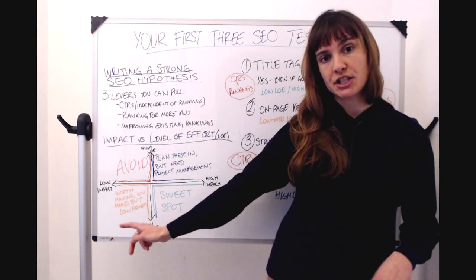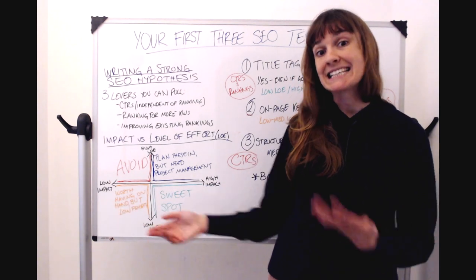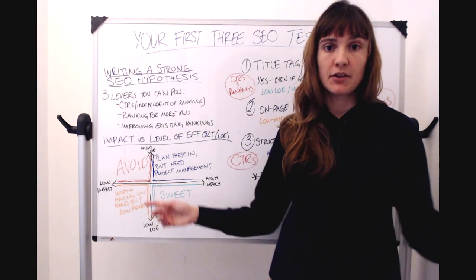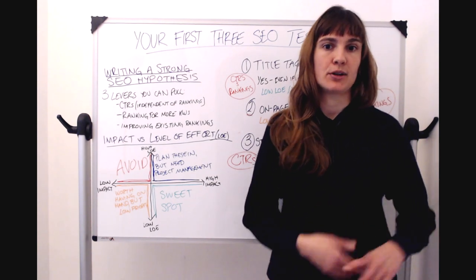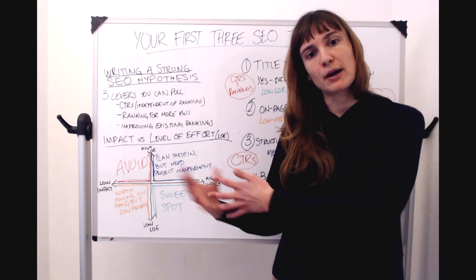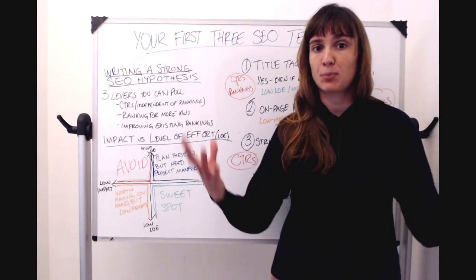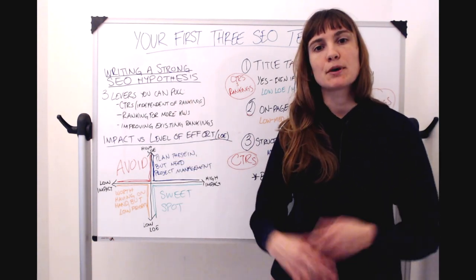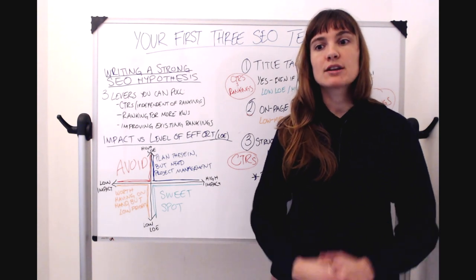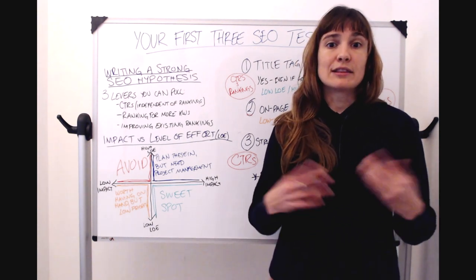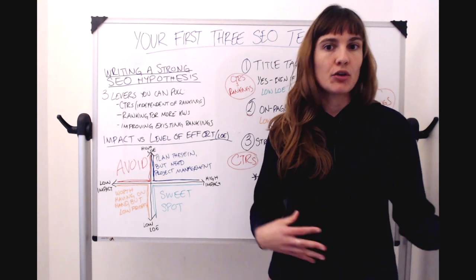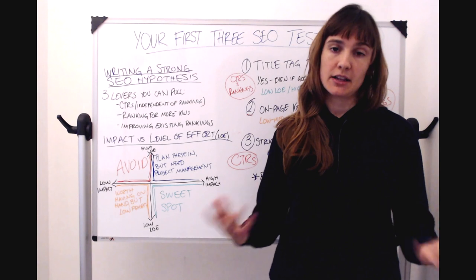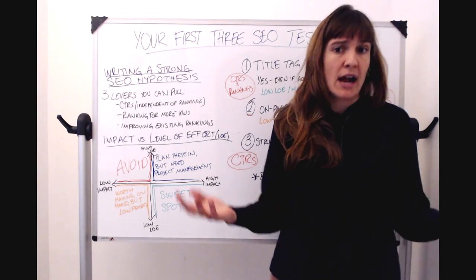In the lower left-hand quadrant, we have low impact tests that are also low level of effort. I've put this in amber because you should have these in your testing program. You still want to run them. Again, they shouldn't be your top priority tests, but sometimes they produce surprising results. So these are things that maybe pull the lever, but are easy to implement. Or they are low impact changes like adding alt text that we know don't cause big swings in organic traffic. But again, you might get surprising results or they're just good practice to do anyway.